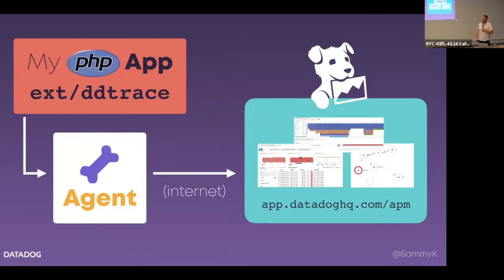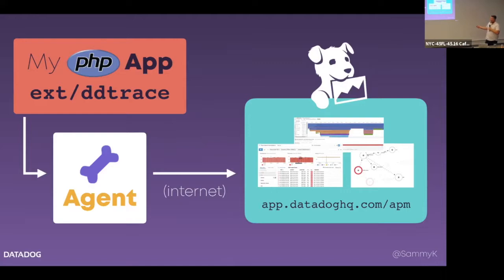The high level of how it works is actually similar to the Blackfire setup. We have an extension called ddtrace. You install the extension, and there's the Datadog agent which you install on your host, which does a lot of things — it can parse logs, pull in traces from other languages. Both of these are open source and on GitHub. The ddtrace extension is written in C because PHP is written in C. The agent is written in Go. The agent will send traces to the Datadog UI, and you'll be able to see all the information from the traces.